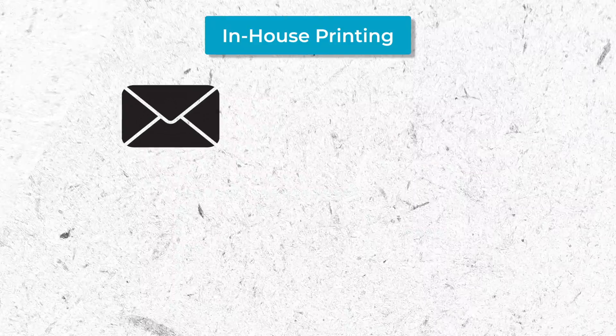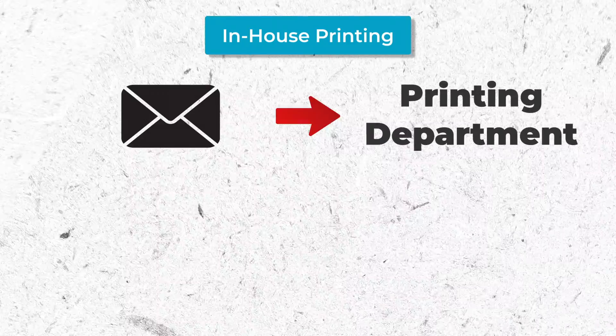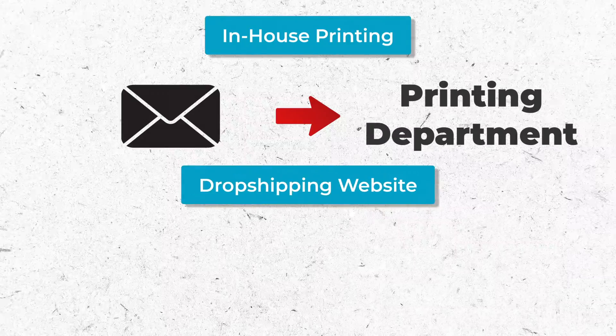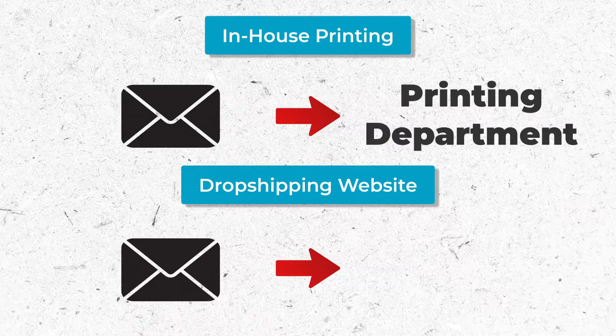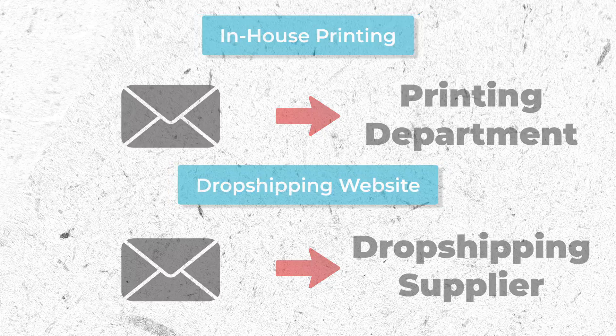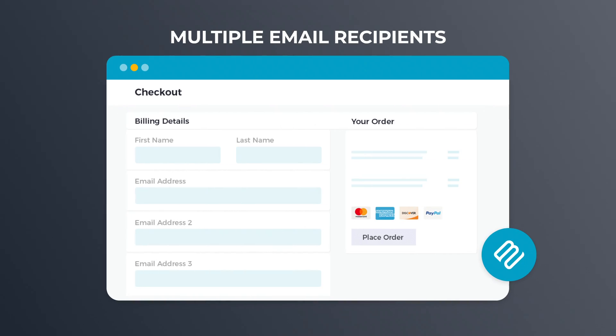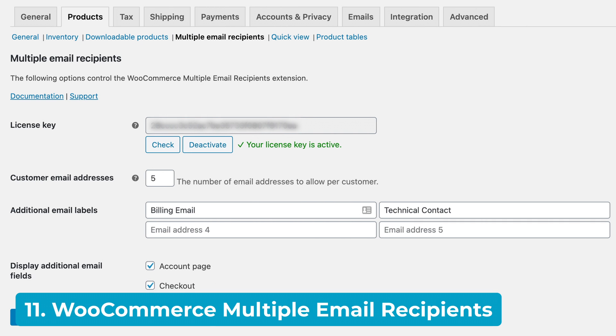At the beginning of this video, I promised you 12 plugins, but I've only shown you 10 so far. So what's missing? Well, remember when I talked about automating your order notifications? By default, WooCommerce sends order notification emails to the website administrator, which isn't very handy when you're trying to run a print-on-demand business. If you print products in-house, you'll need to set up an automation to route new order emails to the printing department. If you use dropshipping, the new order emails must be sent to the dropshipper. The solution is to install the WooCommerce Multiple Email Recipients plugin and use it to send order emails to the correct person for on-demand printing and dispatch.